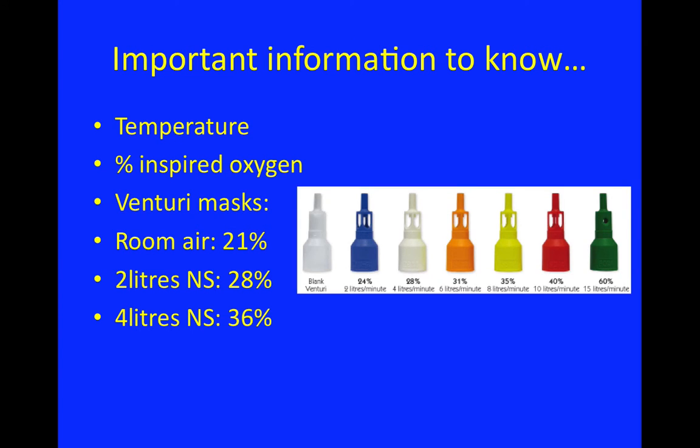For those of you that haven't taken an arterial blood gas before, once you go to the machine and pop it in, there are a couple of things you need to know about the patient because it changes the results and how you'd interpret those results. Firstly, it's the most recent temperature you have for the patient, and also you need to know what inspired oxygen they have. If somebody's on room air, we know that's 21%; 2 litres by nasal specs is roughly 28%; 4 litres by nasal specs is 36%. The pictures here show different types of Venturi mask that we use on the wards and what the different colours equate to in oxygen.